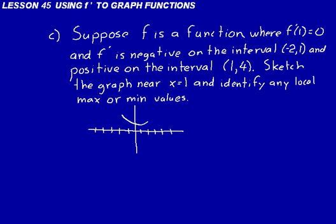And then the slope is positive on the interval from 1 to 4. So just sketching part of that, we know it's going to be positive. So that means we could identify a local minimum right there at 1. And we could just write on here, local min at x equals 1.